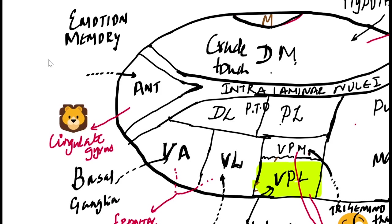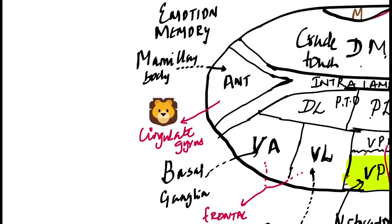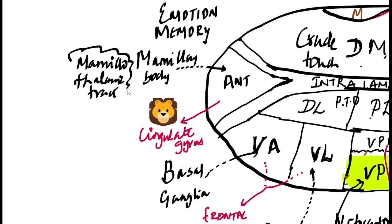Mammillary body. The efferent is the cingulate gyrus. Emotion and memory — this is the mammothalamic tract, which is another important tract in our thalamus. It forms an important circuit.